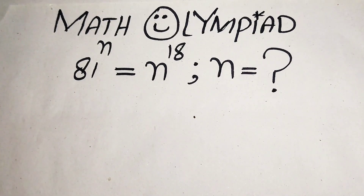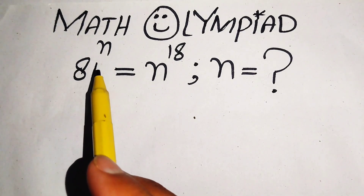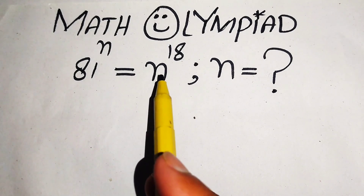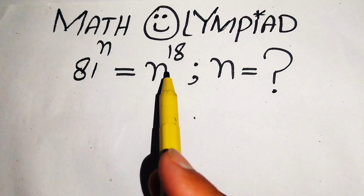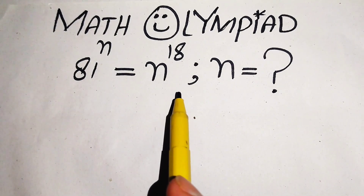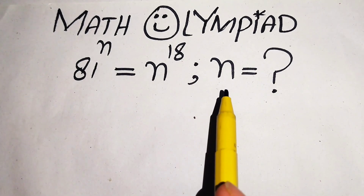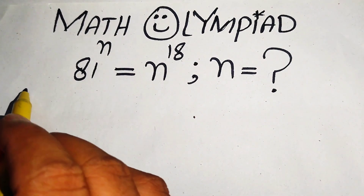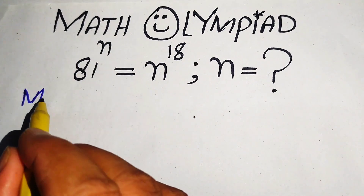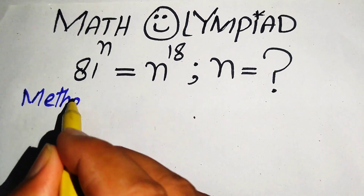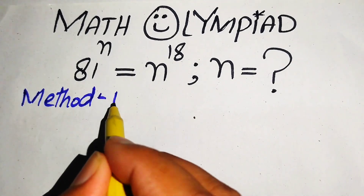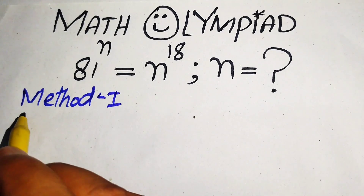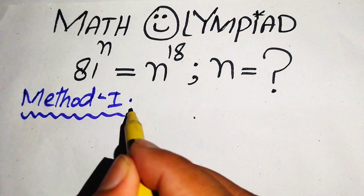Welcome. We solve this algebra problem: 81 to the power of n equals n to the power of 18. We solve this exponential equation for the values of n. We solve this problem by two methods, so first we solve it by method number one.